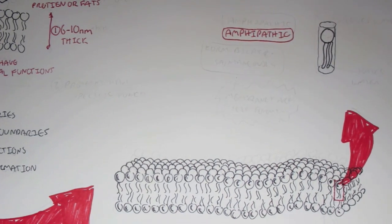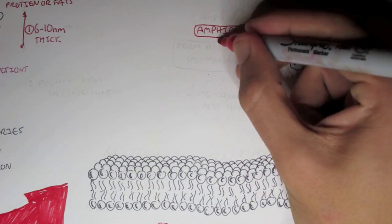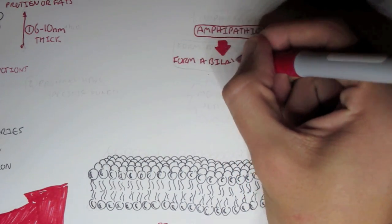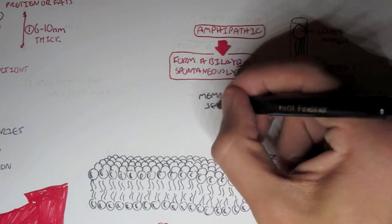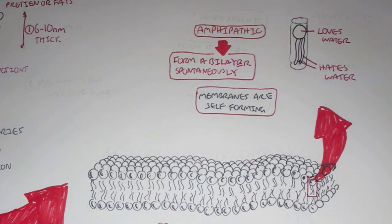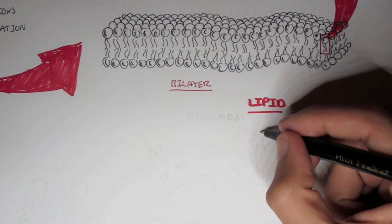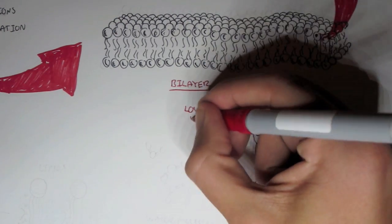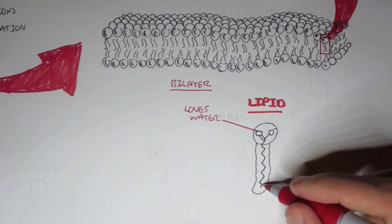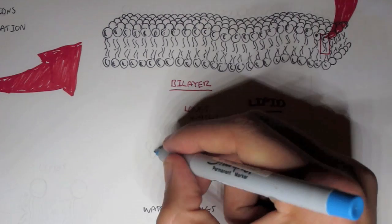But for now, let's look at one of these lipid molecules that form the membrane lipid structure. And you can say that the shape of it is cylindrical surface area and it's also amphipathic. What does this mean? It means that one side of the lipid loves water and the other side hates water. And this structure enables it to form a bilayer spontaneously. And the membrane are actually self-forming itself.